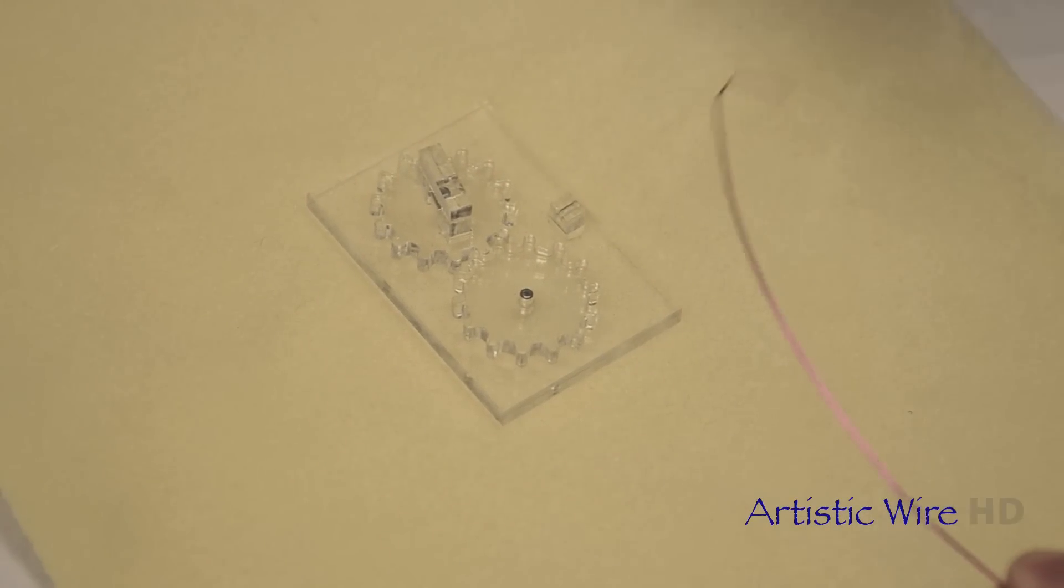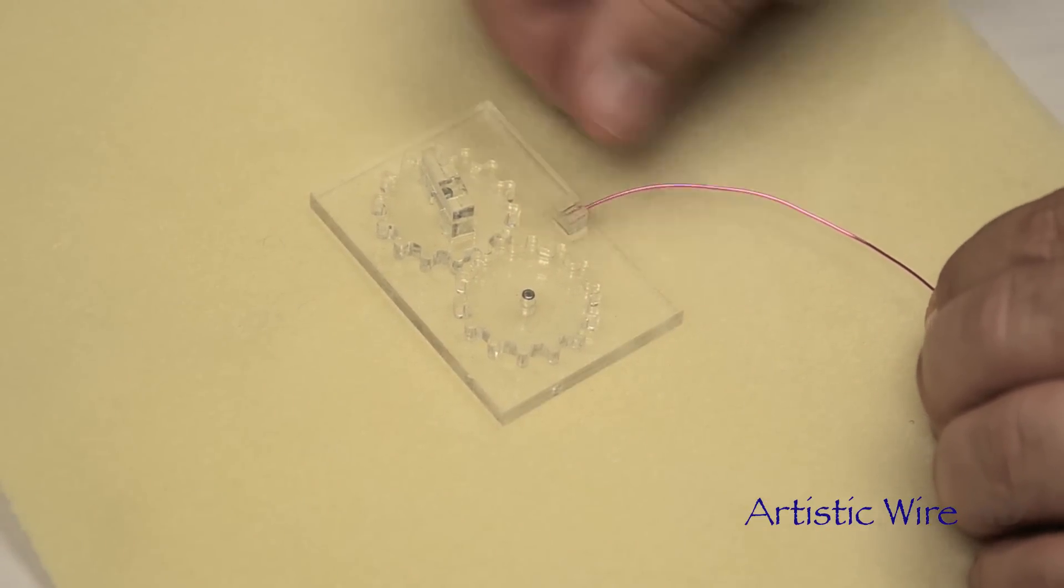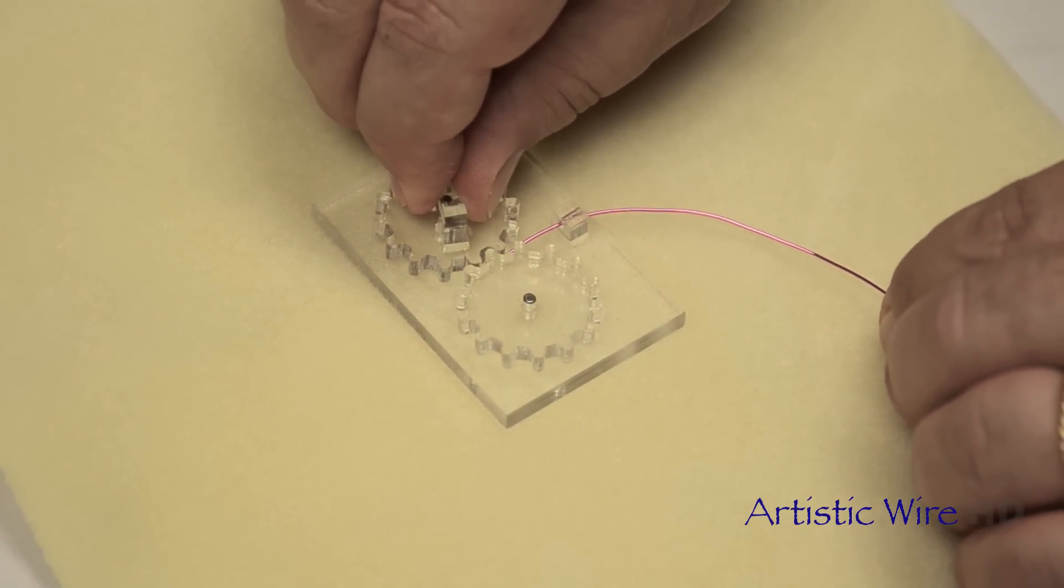We're going to cut off some artistic wire. The wire needs to be of a size that will fit through this guide. Twenty-two gauge is the best.